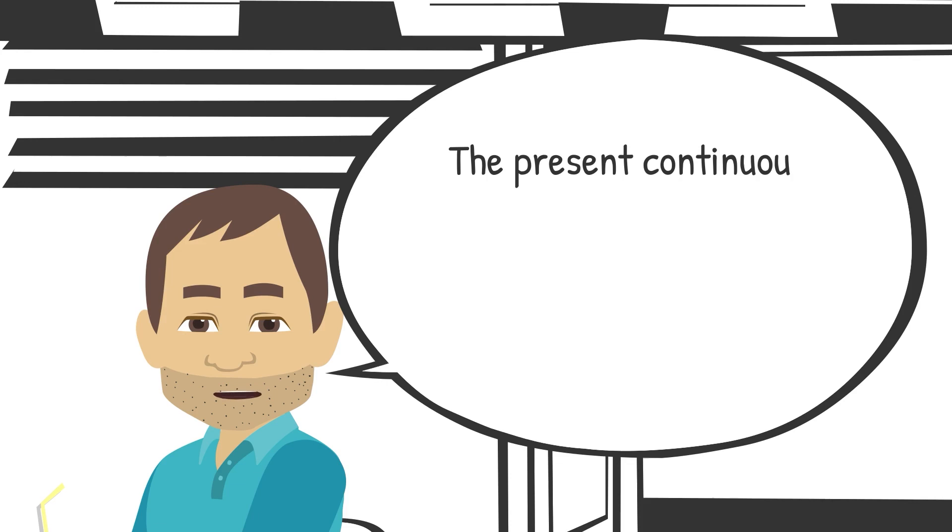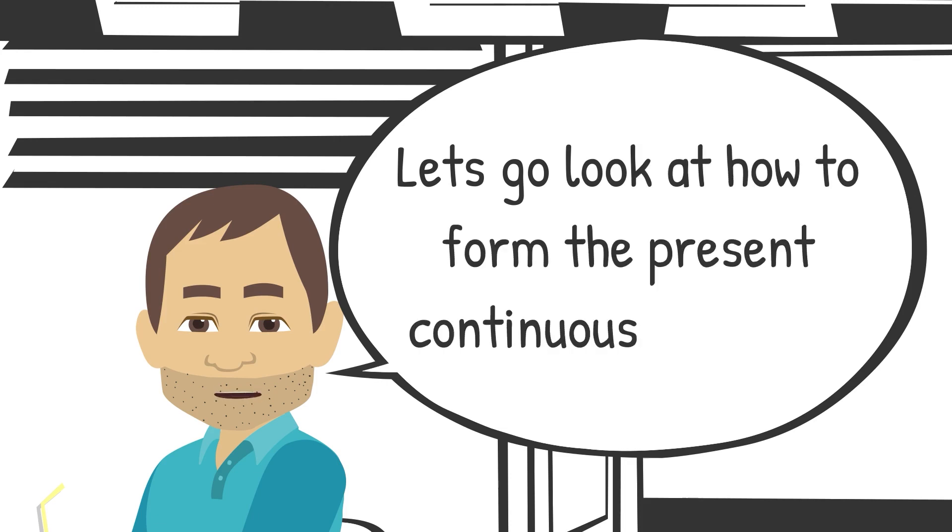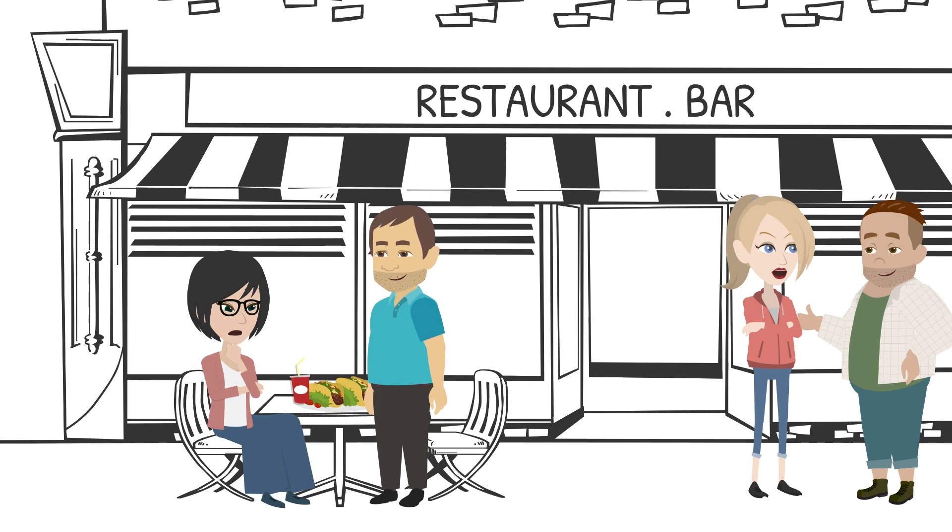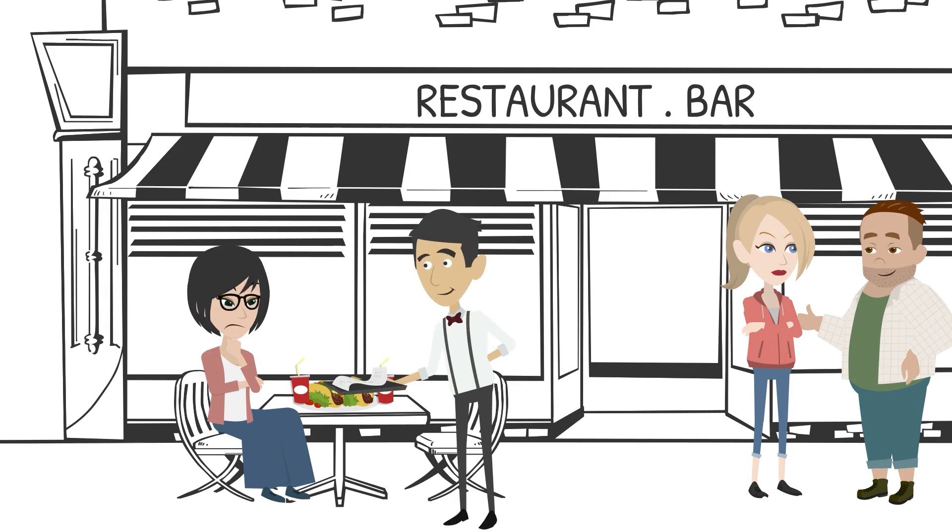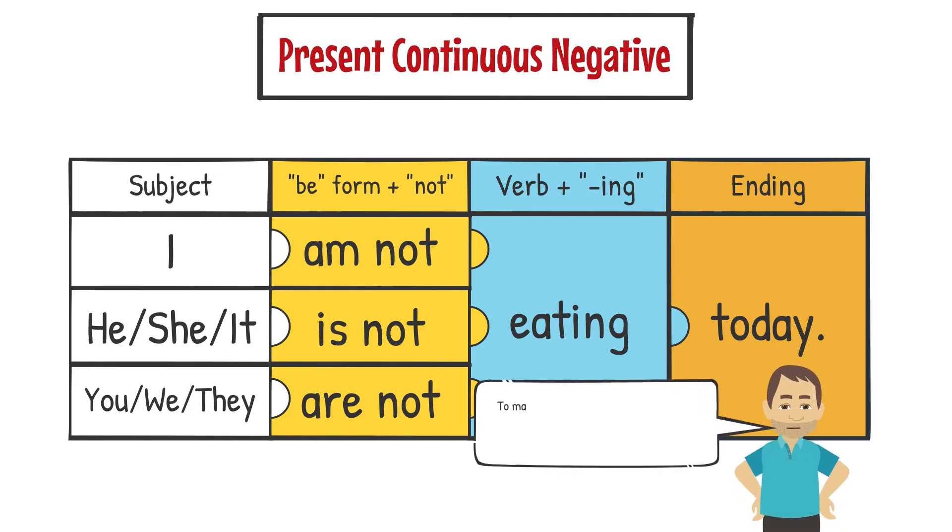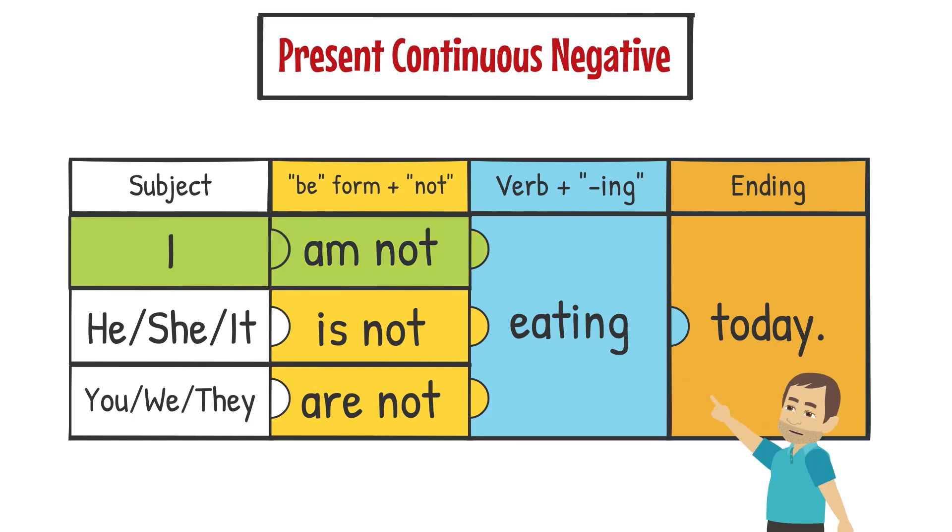The present continuous negative follows the same rules as the present simple negative. Let's look at how to form the present continuous negative. To make the negative form of the present continuous, just add not after the be verb. I am not. He is not. She is not. It is not. You are not. We are not. They are not.